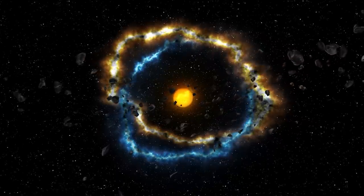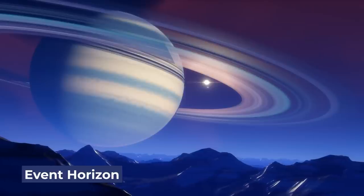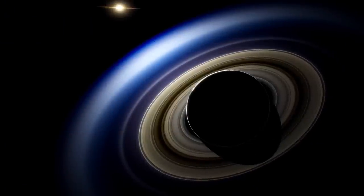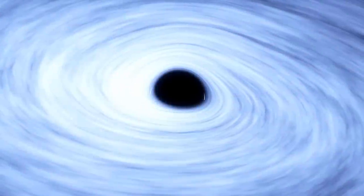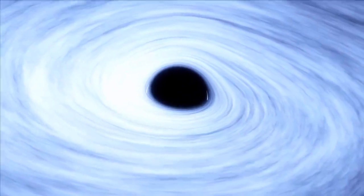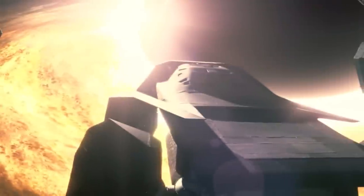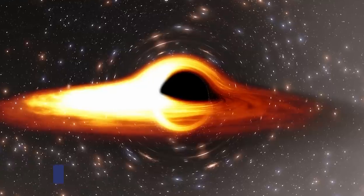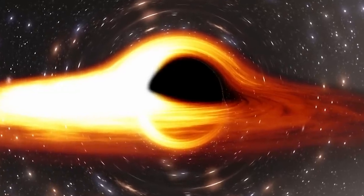Now, black holes are super mysterious and have three layers. Imagine it like a really powerful vacuum cleaner. The outer layer is the event horizon, like a boundary or a point of no return. Once something, like light or objects, crosses this boundary, it gets trapped forever because the black hole's gravity is too strong. Inside the event horizon, there's another layer called the inner event horizon. It's like a deeper part of the black hole that's even harder to escape from. And finally, at the very center of the black hole, there's something called the singularity, which is like the heart of the black hole where all its mass is concentrated. The singularity is like the super dense heart of a black hole where all its mass is squeezed into an incredibly tiny space. It's like a point in the fabric of space and time where everything gets packed really tightly.